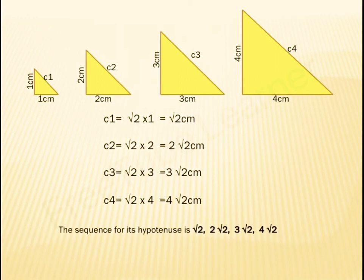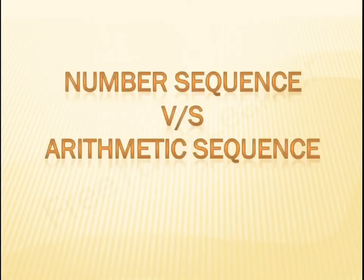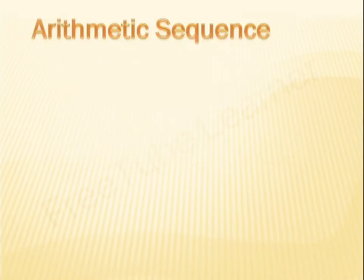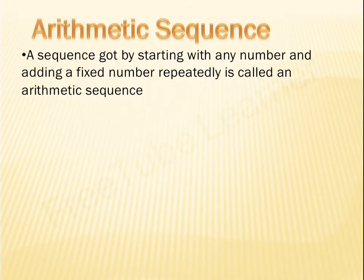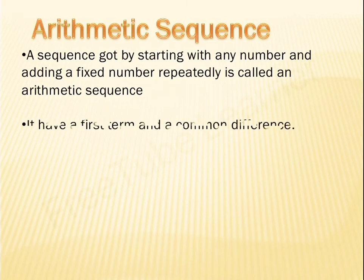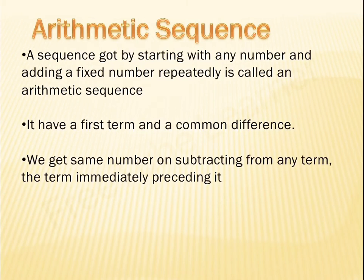This is just an introduction to number sequences. Now let us see the difference between number sequences and arithmetic sequences. A sequence formed by starting with any number and adding a fixed number repeatedly is called an arithmetic sequence — also known as an arithmetic progression. It has a first term and a common difference. We get the same number on subtracting any term from the one immediately preceding it.